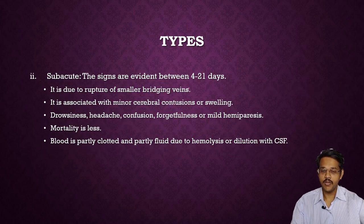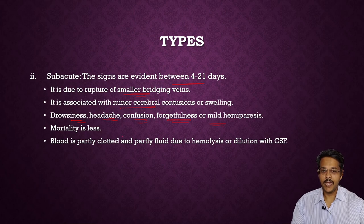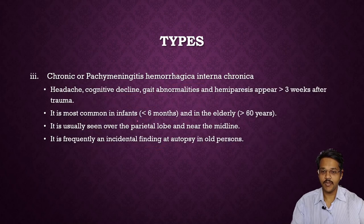Sub-acute subdural hemorrhage is evident within 4 to 21 days. It is due to rupture of small bridging veins and is associated with minor cerebral contusions or swelling. Symptoms include dubious headache, confusion, forgetfulness, and mild hemiparesis. Mortality is less in these cases. Blood is partially clotted and partially fluid due to hemolysis or dilution by CSF.